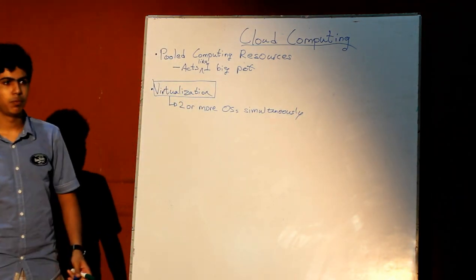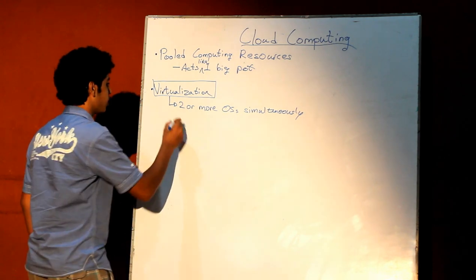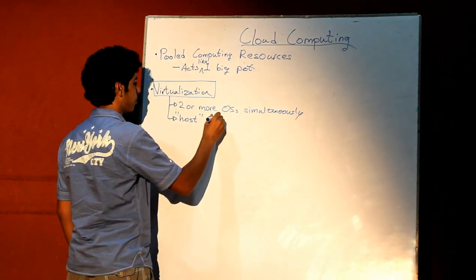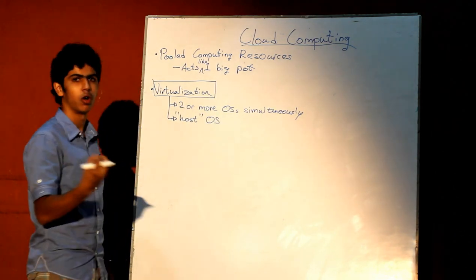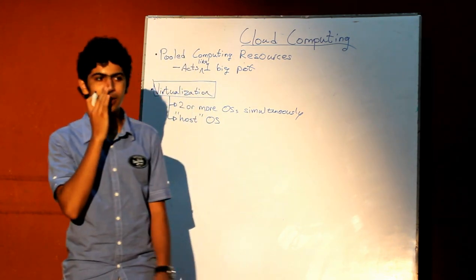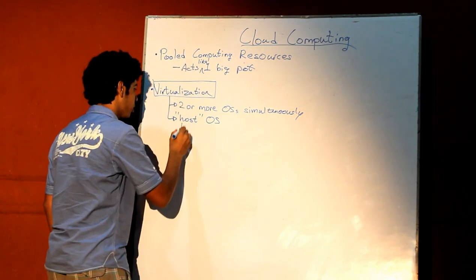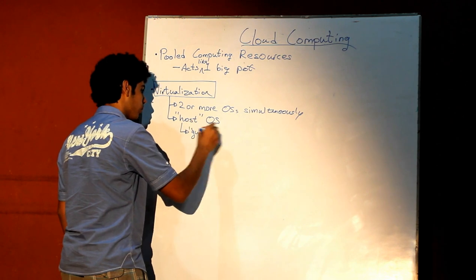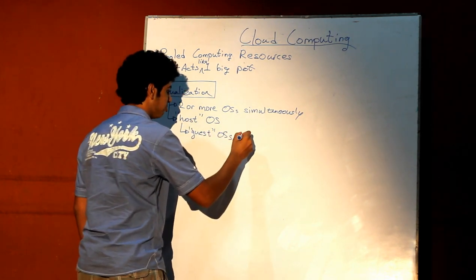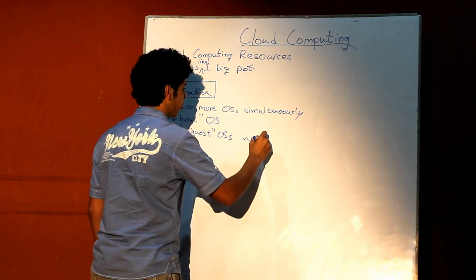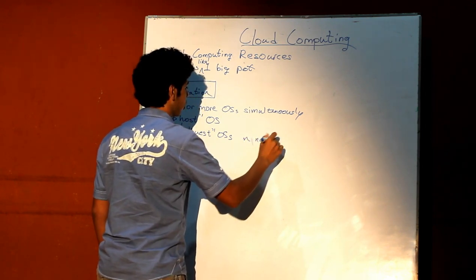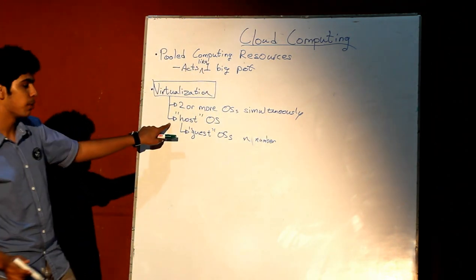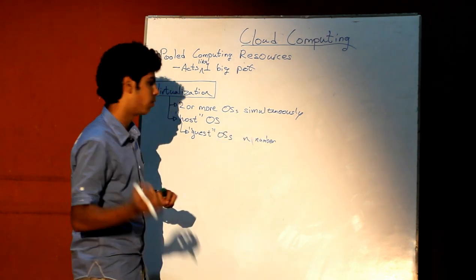The general idea of virtualization is that you always have a host OS. It's called a host because this is the main OS that runs on the base level of hardware. This host OS manages the subsequent guest OSs. There can be any n number of guest OSs depending on the power of your hardware. But at any point in time, there can only be one host OS running on a specific set of hardware.